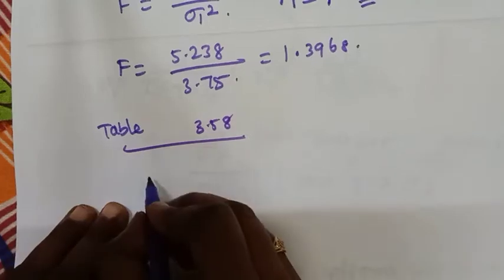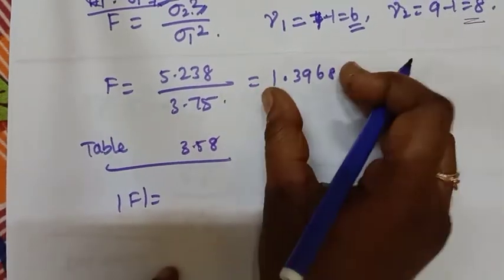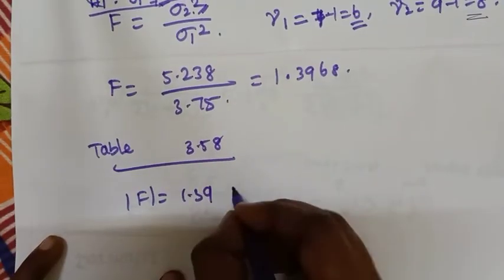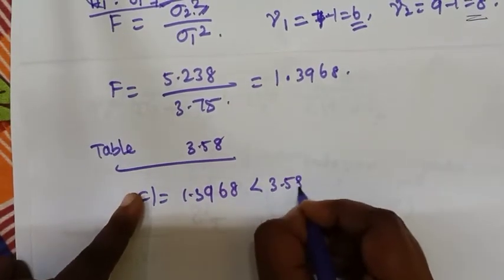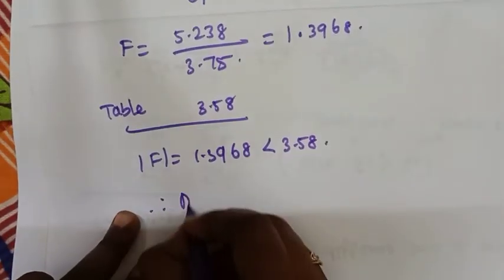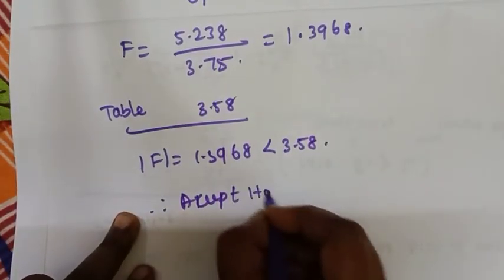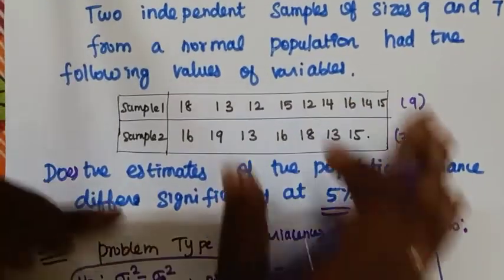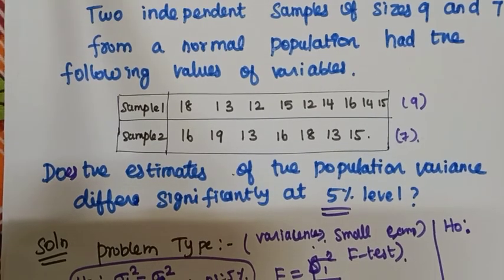Now, the test statistic value is 1.3968, which is less than the table value of 3.58. So we accept H0. That means for the 2 samples, the variances are equal — there is no significant difference. Okay, thank you, have a good day.